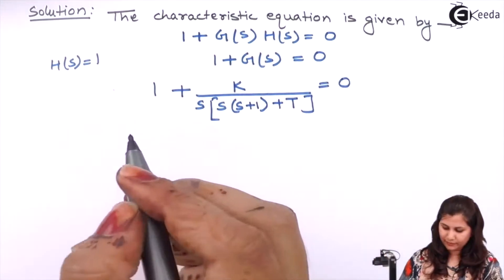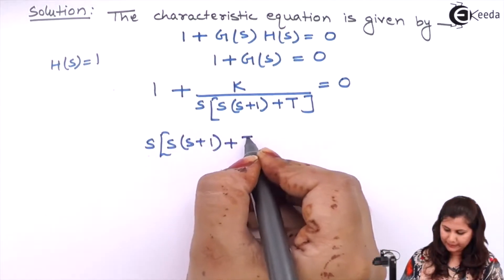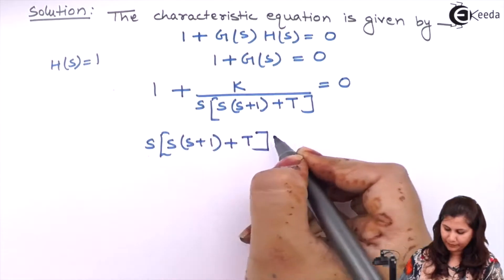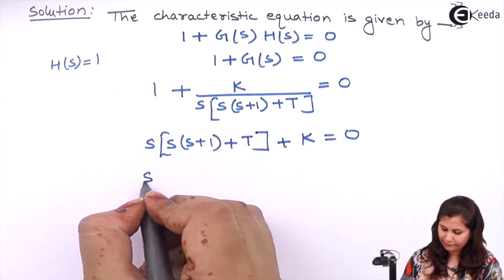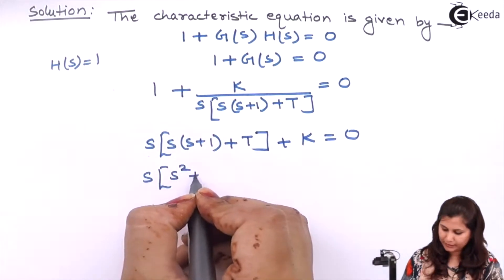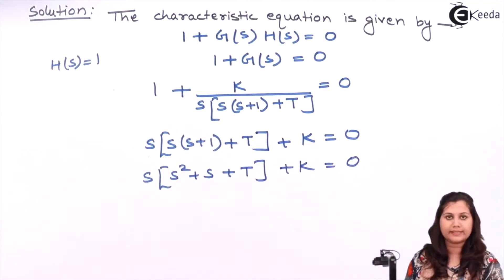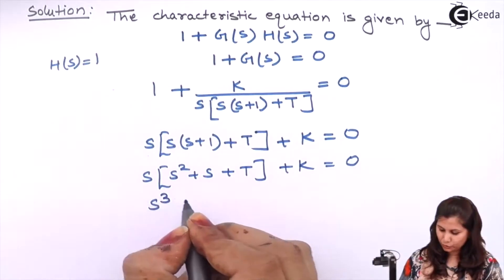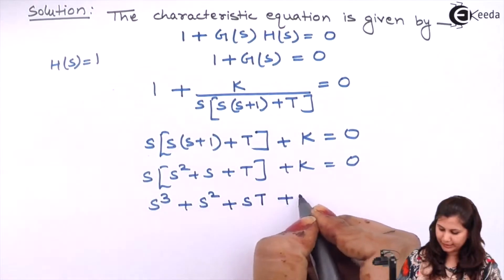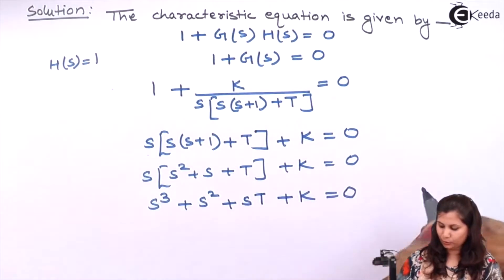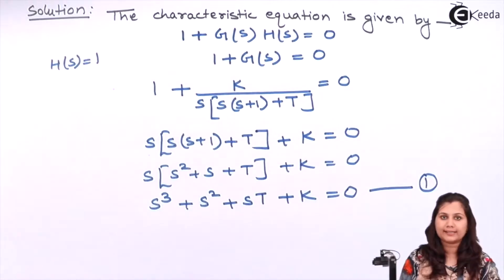Solving this, we will have S(S)(S+1+T) plus K equals to 0, which gives us S³ plus S² plus TS plus K equals to 0. We number this equation as equation 1. So this is the characteristic equation of our system.